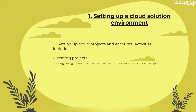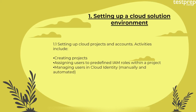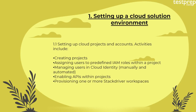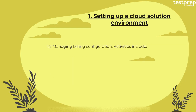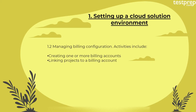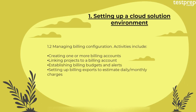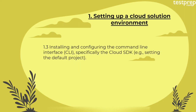Activities for setting up cloud projects and accounts include: creating projects; assigning users to predefined IAM roles within a project; managing users in Cloud Identity manually and automated; enabling APIs within projects; and provisioning one or more Stackdriver workspaces. Number two: managing billing configuration — activities include creating one or more billing accounts, linking projects to a billing account, establishing billing budgets and alerts, and setting up billing exports to estimate daily or monthly charges.